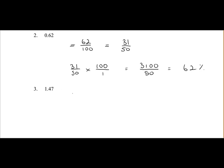Here we have 1.47, so convert that to a fraction. There's two places after the decimal point, so we just put the number over 100. So it's 147 over 100. So that's our fraction.